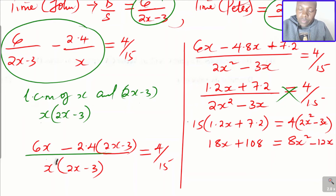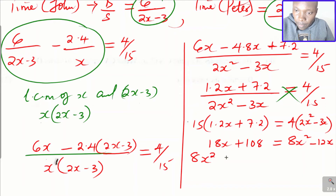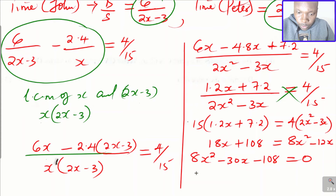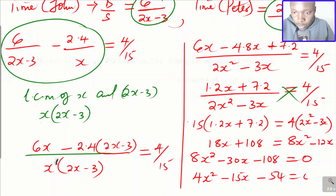Rearranging into standard quadratic form by grouping all terms on one side: 8x² subtract 12x subtract 18x subtract 108 = 0, which simplifies to 8x² subtract 30x subtract 108 = 0. Dividing all terms by 2 gives 4x² subtract 15x subtract 54 = 0.